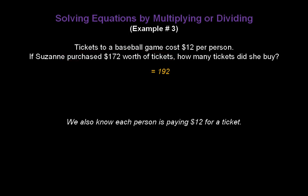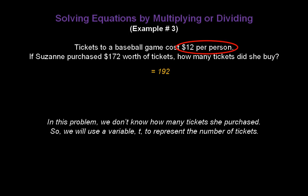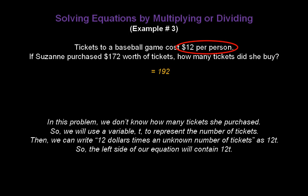And we also know each person is paying $12 for a ticket. Now, let's suppose that three people were going. The total cost would be $12 plus $12 plus $12. That's repeated addition, which is multiplication. So we could also write that as $12 times 3. In this problem, we don't know how many tickets she purchased. So we're going to use a variable t to represent the number of tickets or the number of people going to the baseball game. Then we can write $12 times an unknown number of tickets as 12 times t. So the left side of our equation will contain 12t.